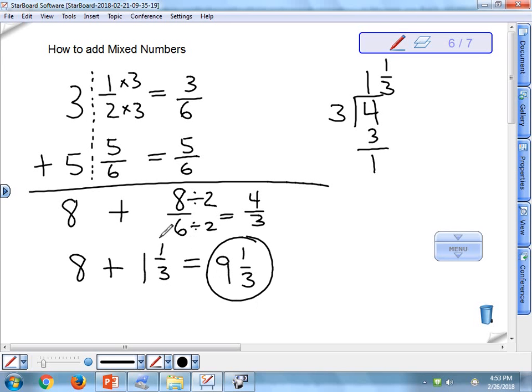So that's the process for adding mixed numbers. We simply combine the whole number parts together. Combine the fraction parts together. Simplify. If there are any improper fractions remaining, we convert those into mixed numbers and combine the remaining pieces to get our final answer.